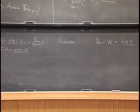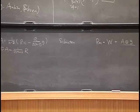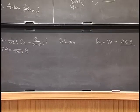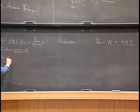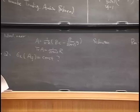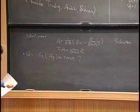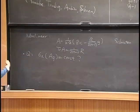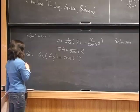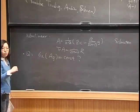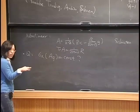A natural question is: instead of taking the trace, consider other symmetric functions. Take sigma-k, the k-th elementary symmetric function of the eigenvalues of the Schouten tensor, and ask whether we can find a metric in a conformal class such that sigma-k equals a constant. If you write the conformal change of the metric, this gives a fully nonlinear equation whose leading term is a Hessian equation with gradient terms.